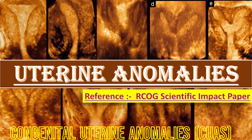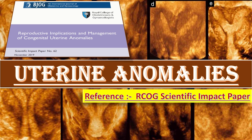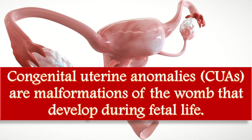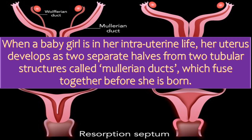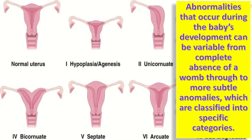This video is about uterine anomalies from RCOG's scientific impact paper named 'Reproductive Implications and Management of Congenital Uterine Anomalies.' Congenital uterine anomalies, or CUAs, are malformations of the womb that develop during fetal life. When a baby girl is in her intrauterine life, her uterus develops from two tubular structures called Mullerian ducts, which fuse together before she is born. Abnormalities during development can range from complete absence of a womb to more subtle anomalies, classified into specific categories.